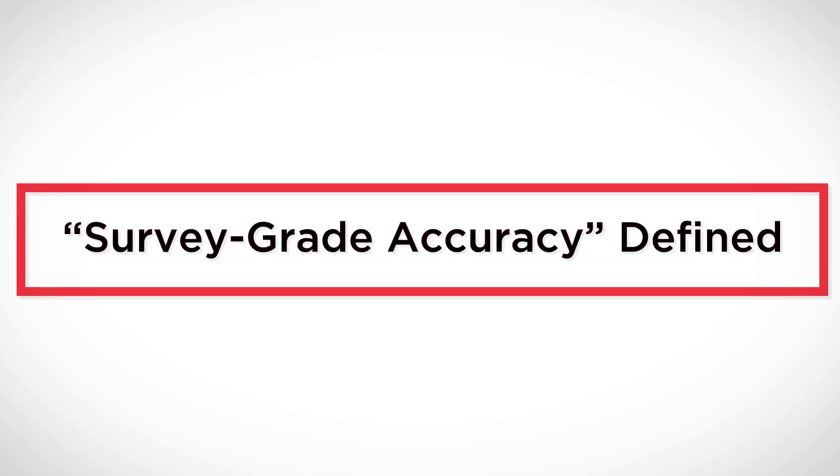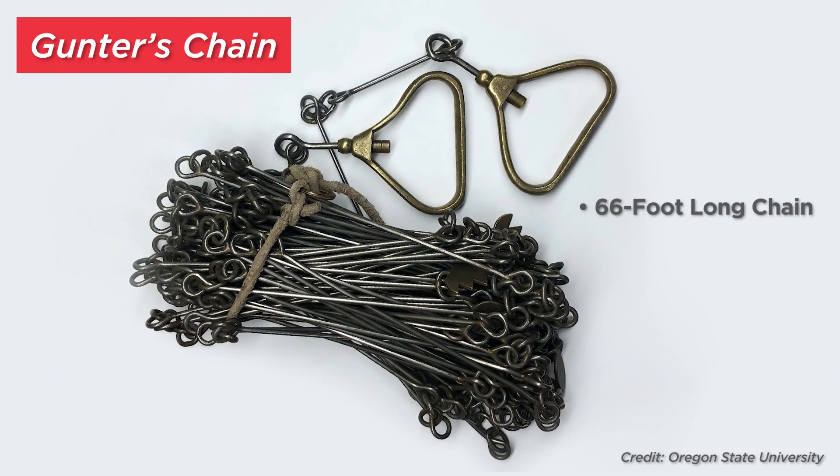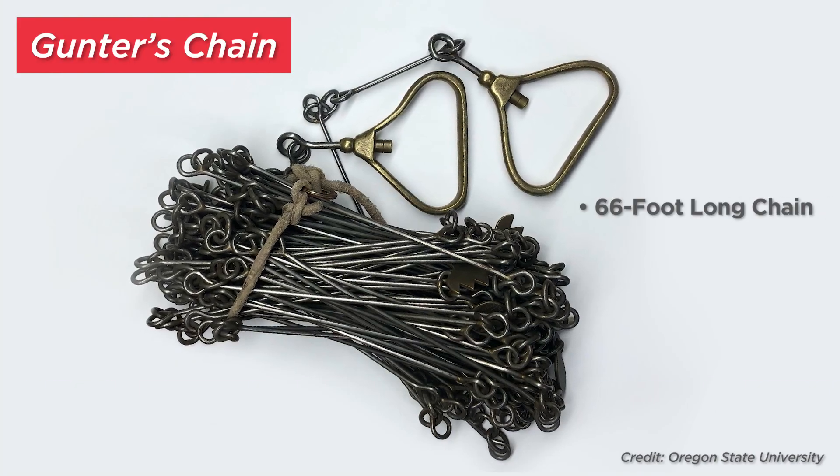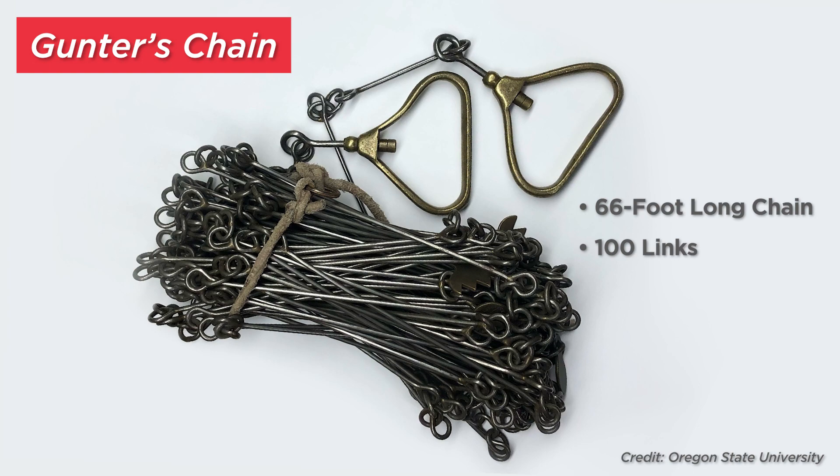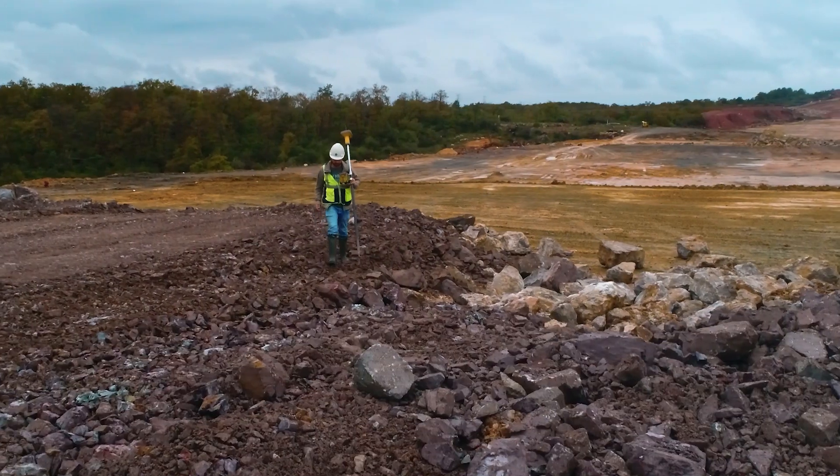Let's start by defining the term survey grade accuracy. Surveyors use a variety of tools. As far back as the year 1620, a technology known as a gunter's chain was used for surveying. A gunter's chain is a 66-foot-long chain divided into 100 links. One acre is actually 10 square chains and is used to measure land area. When property boundaries were surveyed using chains, distances would be off by a foot, multiple meters, or even more.